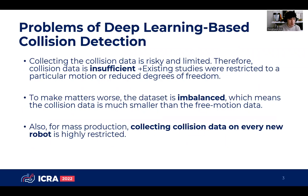The problem of deep learning-based collision detection is as follows. Collecting the collision data is risky and limited; therefore, collision data is insufficient. Existing studies were restricted to a particular motion or reduced degrees of freedom. To make better scores, the dataset is imbalanced, meaning the collision data is much smaller than the free-motion data.